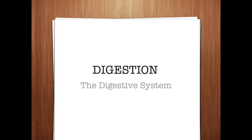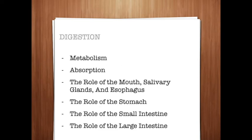Digestion is the process by which complex foods are broken down into nutrients in a form the body can use. Enzymes are responsible for chemical changes that break down foods into simpler forms of nutrients. A nutrient is a substance, usually from food, that is necessary for normal functioning of the body. When we talk about digestion, we'll consider the metabolism, how nutrients absorb into your system, the role of the mouth, salivary glands, and esophagus, the role of the stomach, small intestine, and large intestine.